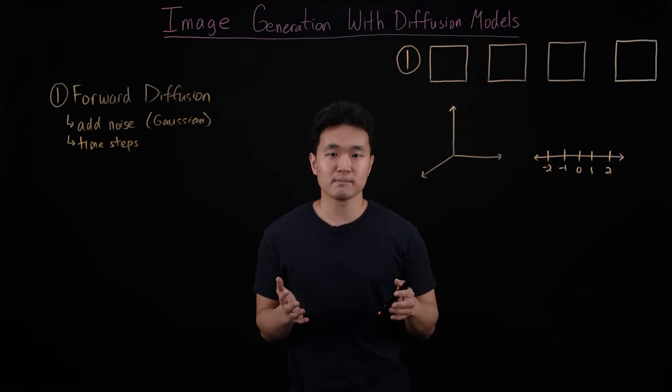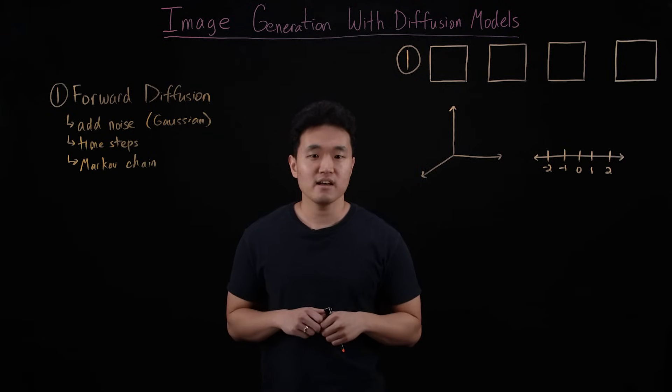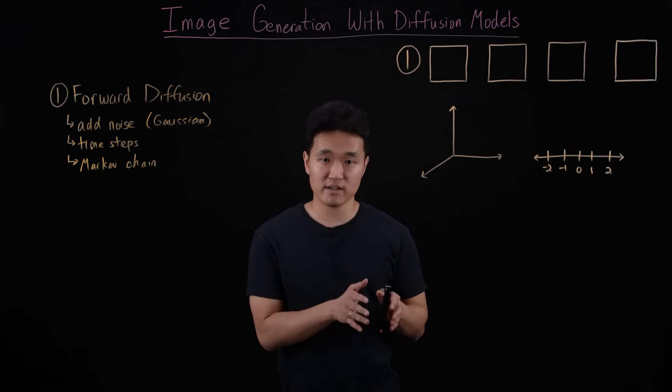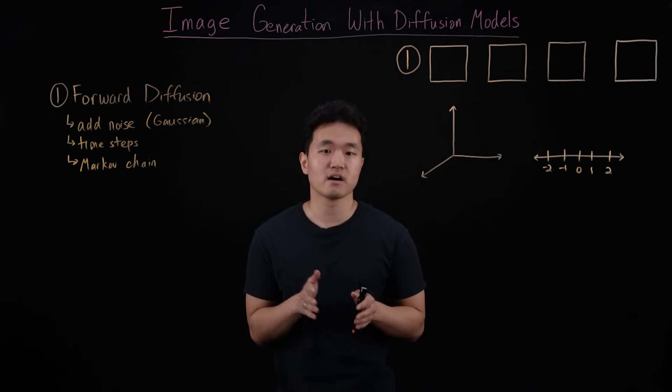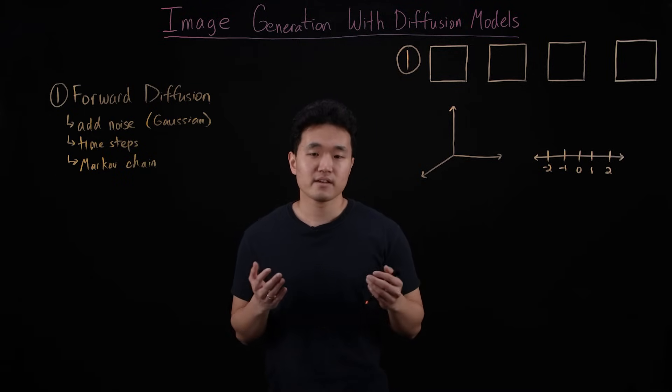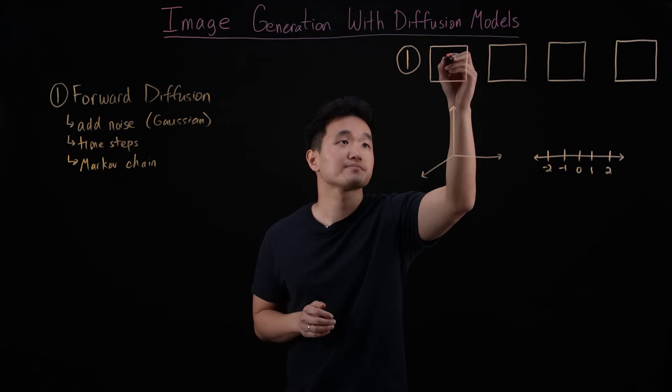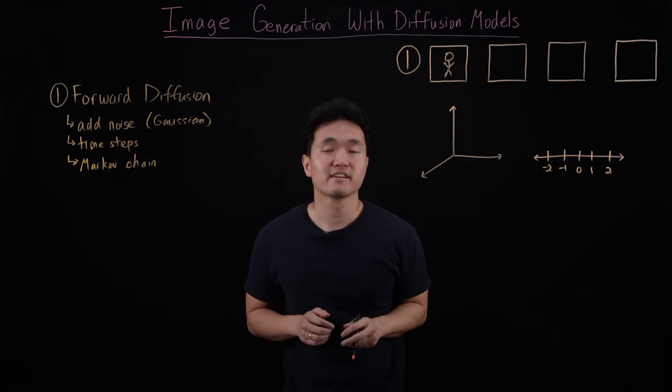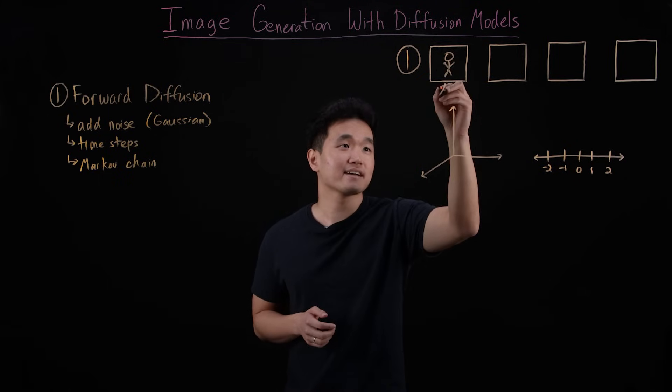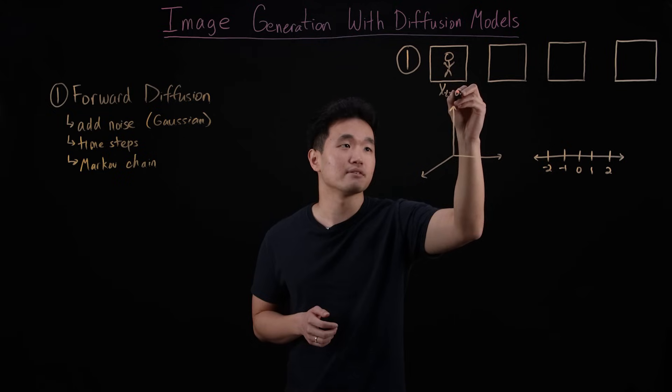Now this noise is added by what's called a Markov chain, which basically means that the current state of the image only depends on the most recent state. So as an example, let's start with an image of a person. My beautiful stick figure here. And label this image x at time t equals to zero.